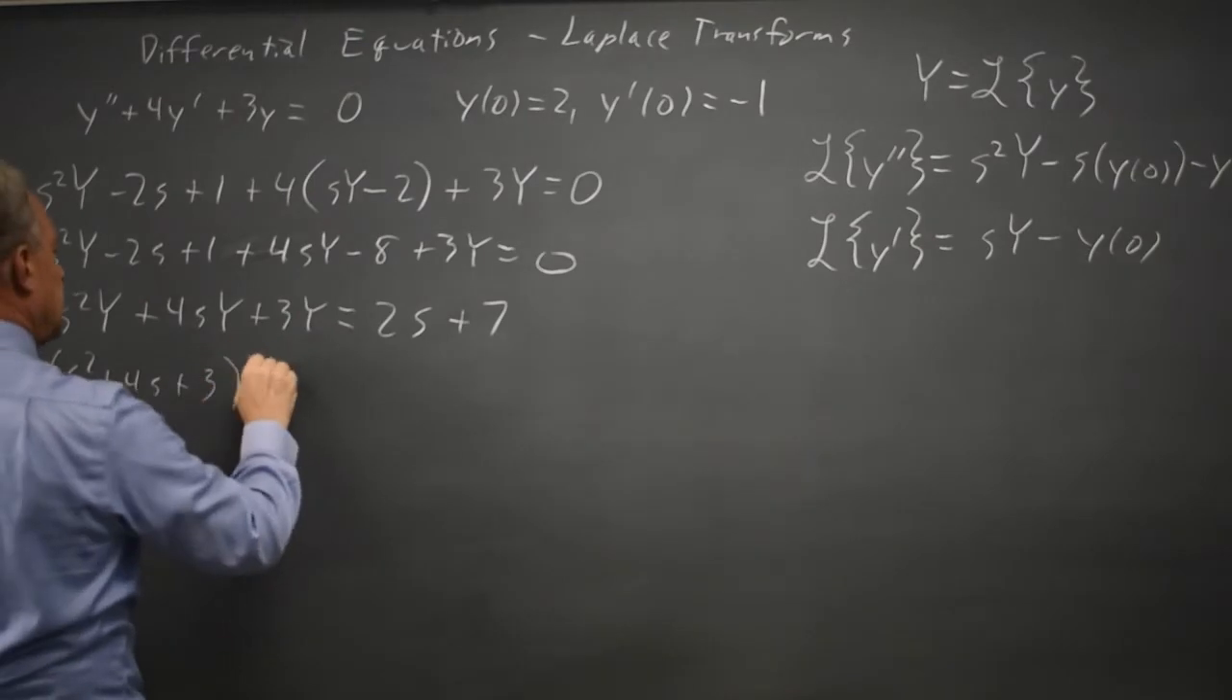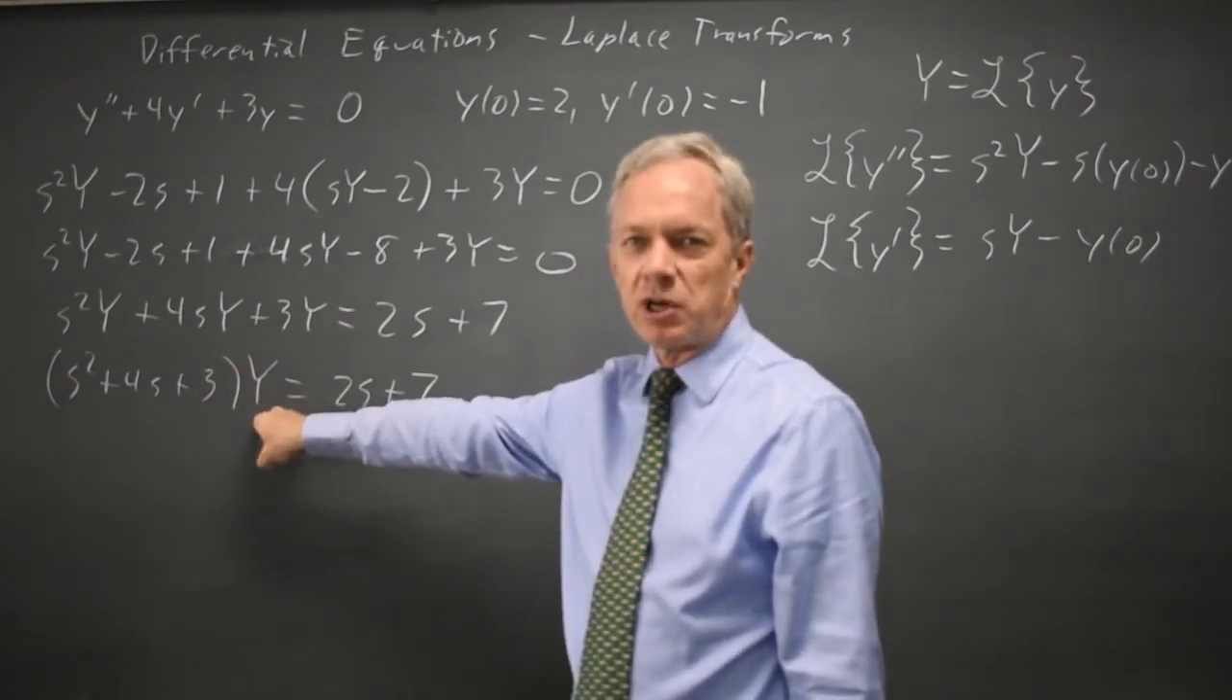Factoring out the common factor of Y on the left, I get s squared plus 4s plus 3 uppercase Y equals 2s plus 7.